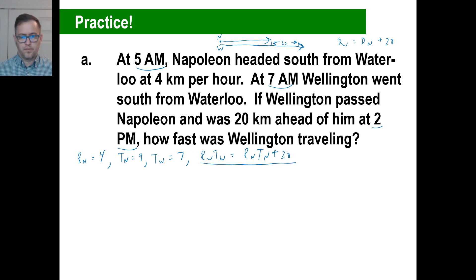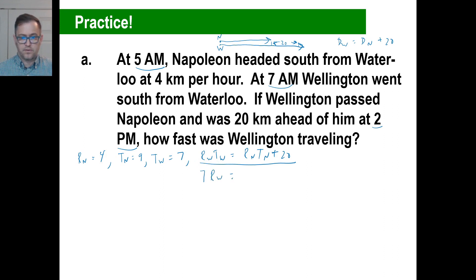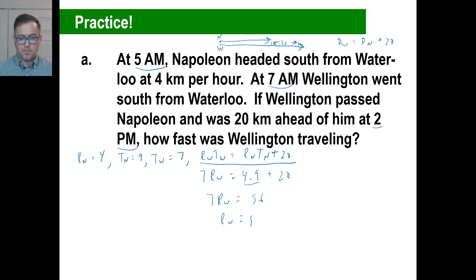Plugging in: rate of Wellington is unknown, time of Wellington is 7 — so 7 times rate of Wellington. Rate of Napoleon is 4, time of Napoleon is 9, plus 20. So 7 times rate of Wellington equals 36 plus 20, which is 56. Therefore the rate of Wellington is 8 kilometers per hour.